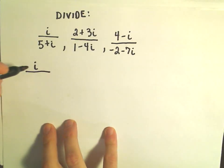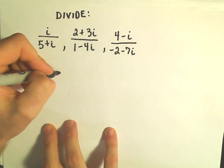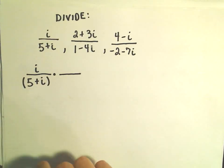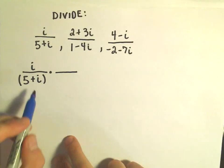So we have i over 5 plus i. What we're going to do in this case, again, is I look at my complex number in the denominator, and I see, well...